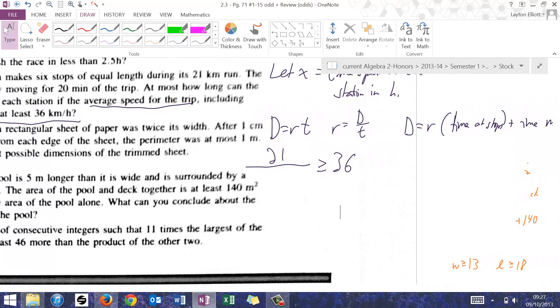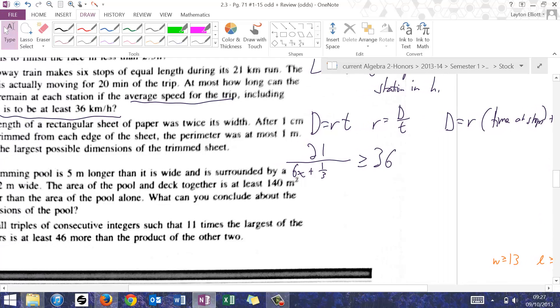So the time at the stops is 6x, because each stop is x. And the time moving is 20 minutes, so that's 1/3 of an hour. And this is actually our inequality, the way they'd want it set up.